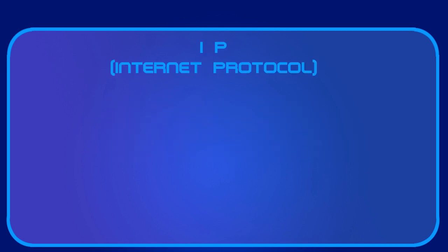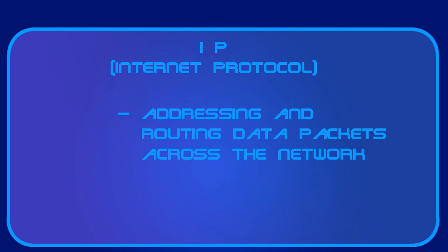Then you have IP, which stands for Internet Protocol. IP is responsible for addressing and routing data packets across the network. It assigns unique numerical addresses — IP addresses — to devices, kind of like names of students in a classroom, allowing them to be identified and located on the network. This is how devices know how to communicate with each other, referring to each other by IP addresses on most Ethernet networks.